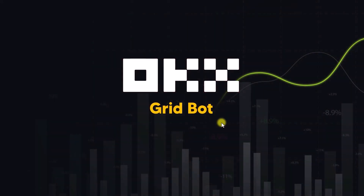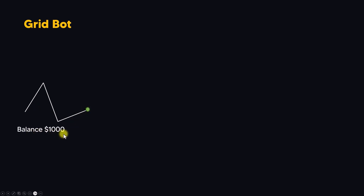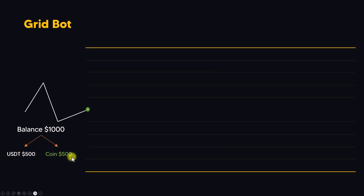In this lecture we will learn about the grid bot concept. For example, this is the price movement of one instrument. In this grid bot, we want to run a grid bot with a balance of 1000 USDT. When we run the bot at this point, what the bot will do is split the balance into two: one portion stays in USDT and the other portion purchases a coin worth 500 dollars.